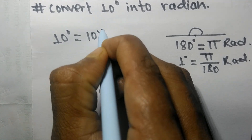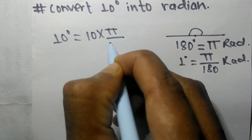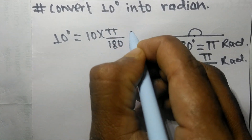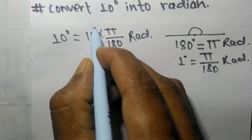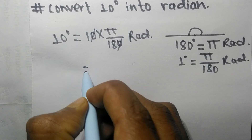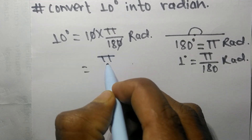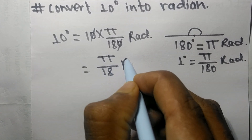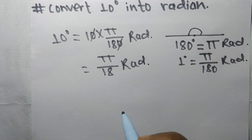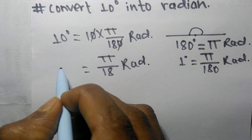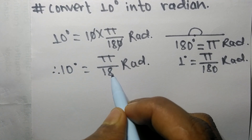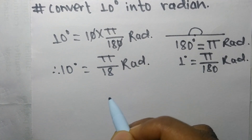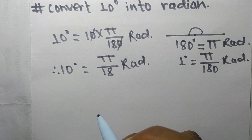The zeros cancel, leaving π/18 radians. So 10 degrees is equal to π/18 radians. That's all for today — thanks for watching.